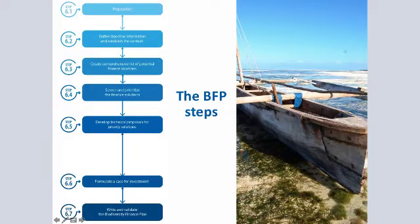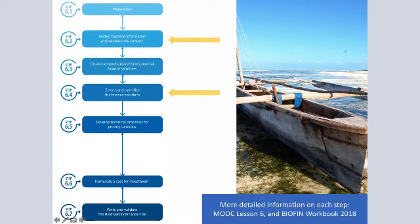If you've gone through the workbook or looked through the lesson already, you'll know that there are seven steps we set out for developing the Biodiversity Finance Plan. I am going to be focusing predominantly on two of those steps today, as these are the two that tend to need the most attention when working with countries. For more information on all the other steps, the MOOC lesson and the workbook will provide that.